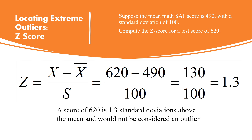Here is an example: suppose the mean of math SAT scores is 490 with a standard deviation of 100. To compute the z-score for a test score of 620: z = (620 − 490) / 100 = 1.3. A z-score of 1.3 means the score is 1.3 standard deviations above the mean, and it would not be considered an outlier.